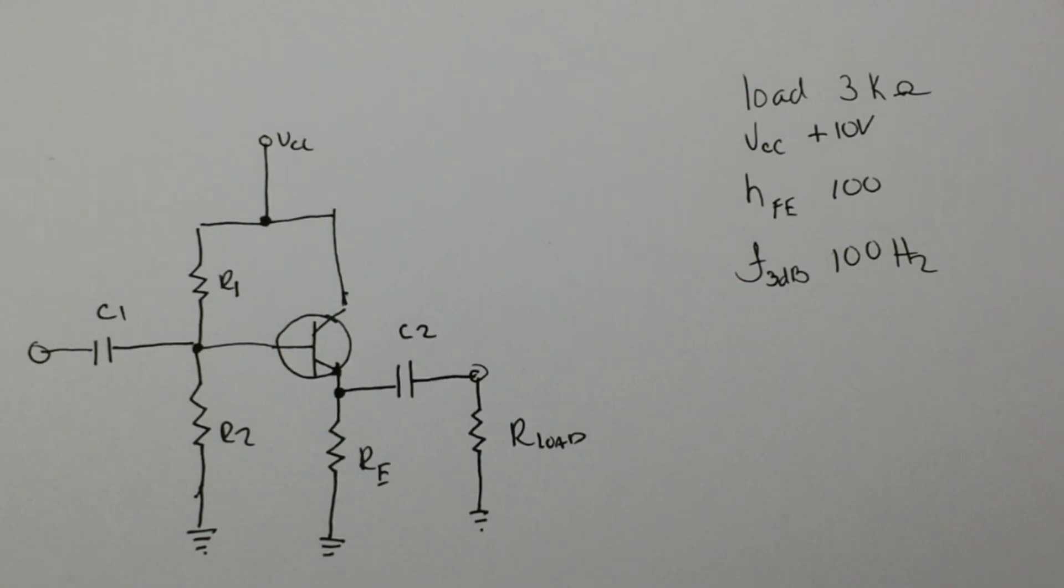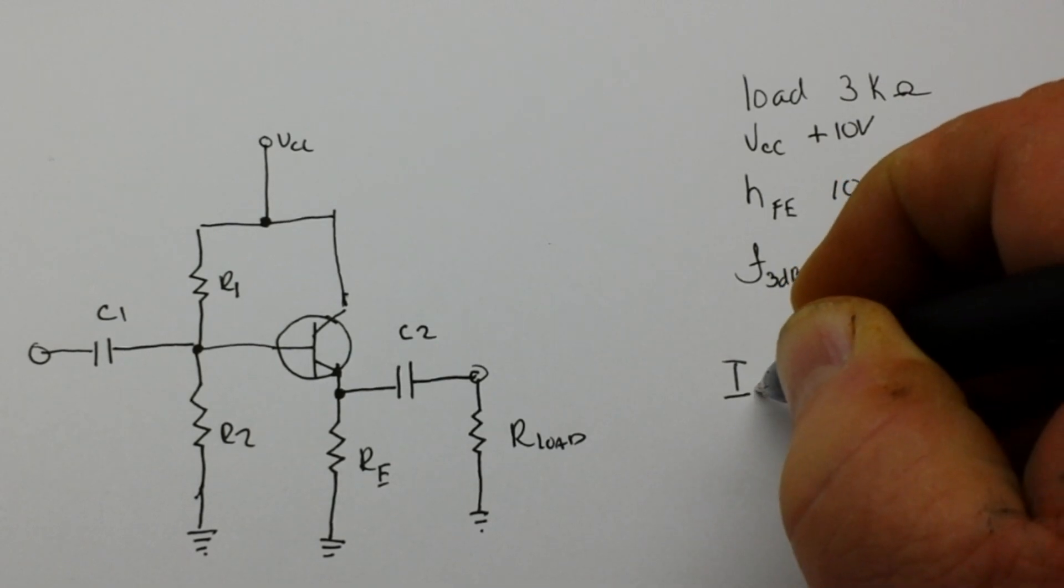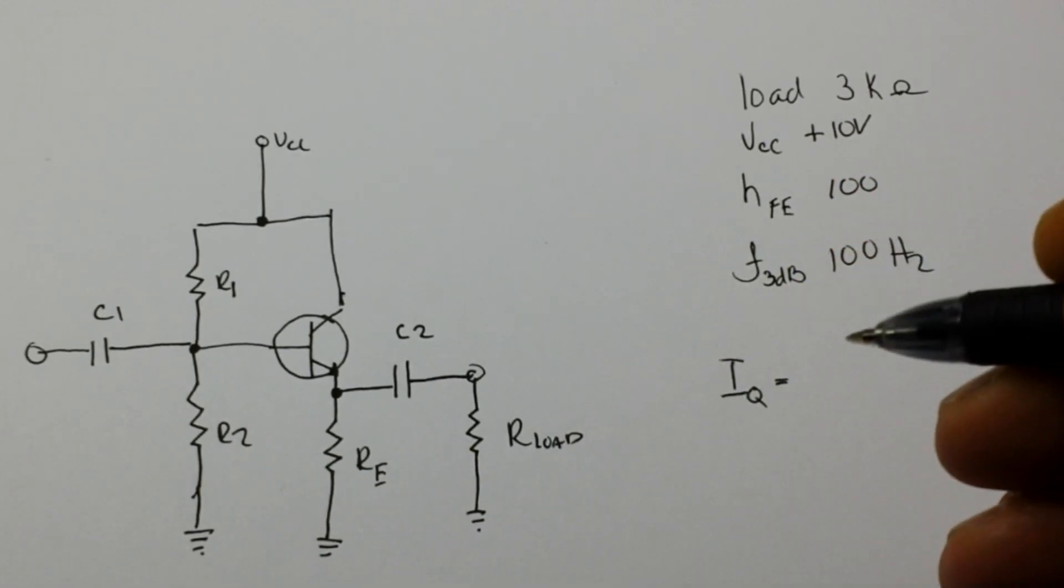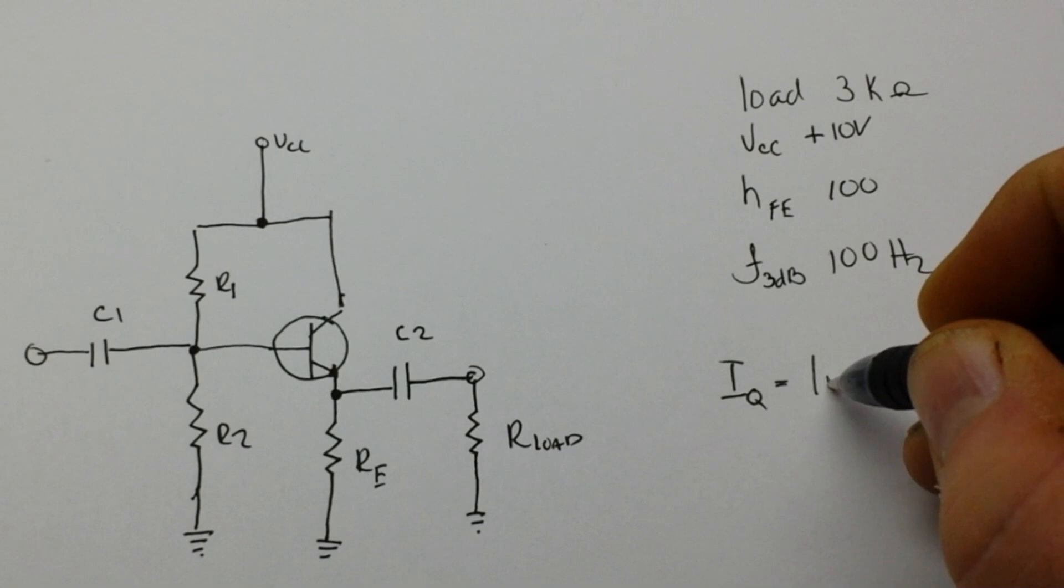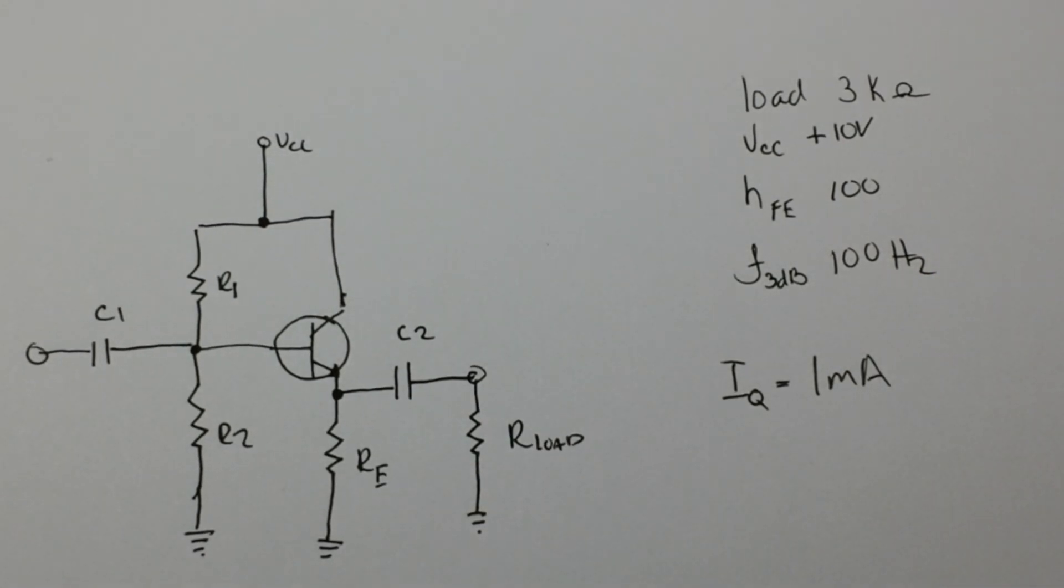But we're going to do something really simple and we're just going to say that we want IQ to be 1 milliamp. That's a safe quiescent current for just about any standard NPN transistor.